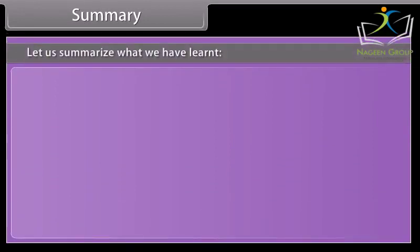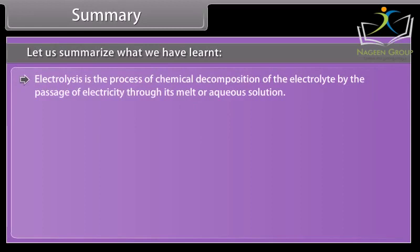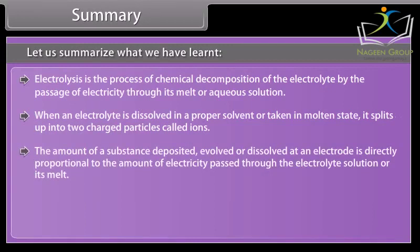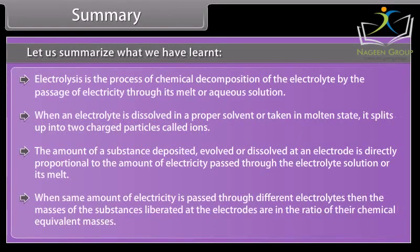Summary. Let us summarize what we have learned. Electrolysis is the process of chemical decomposition of the electrolyte by the passage of electricity through its melt or aqueous solution. When an electrolyte is dissolved in a proper solvent or taken in molten state, it splits up into two charged particles called ions. The amount of a substance deposited, evolved, or dissolved at an electrode is directly proportional to the amount of electricity passed through the electrolyte solution or its melt. When same amount of electricity is passed through different electrolytes, then the masses of the substances liberated at the electrodes are in the ratio of their chemical equivalent masses.